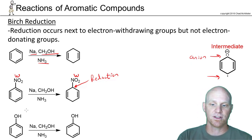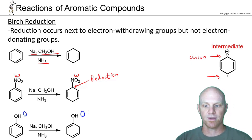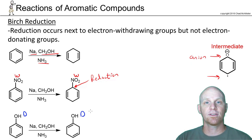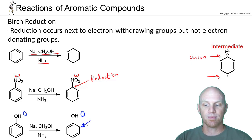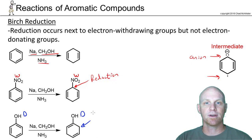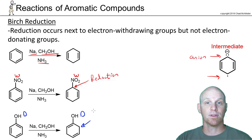Conversely, if I have an electron-donating group like the hydroxyl group, I definitely don't want that donating group next to where the anionic intermediate is going to be — otherwise it would destabilize it. So if you have an electron-donating group, reduction is going to take place never next to that donating group. The rule: with a withdrawing group, reduction takes place next to it; with a donating group, reduction takes place anywhere else but not next to it.